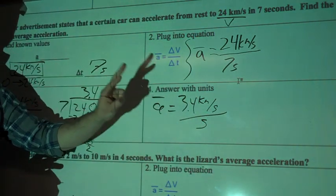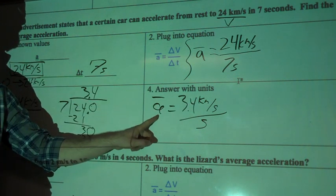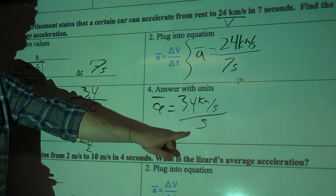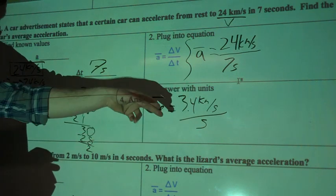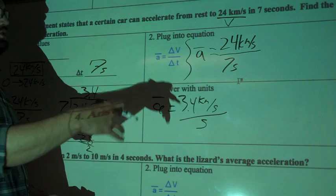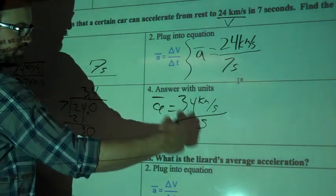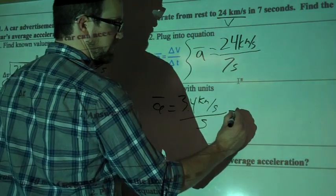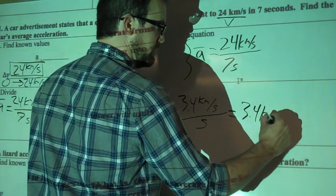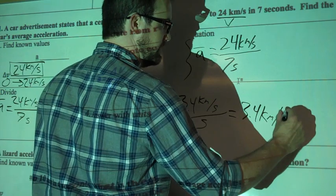So we talked about earlier the two different ways you're going to see acceleration written is that they're going to be kilometers per second per second, okay, or kilometers per second squared, or you'll see it as meters per second second, or meters per second squared. So I'm going to write this, I think the neater way to write it is to write 3.4 kilometers per second squared.